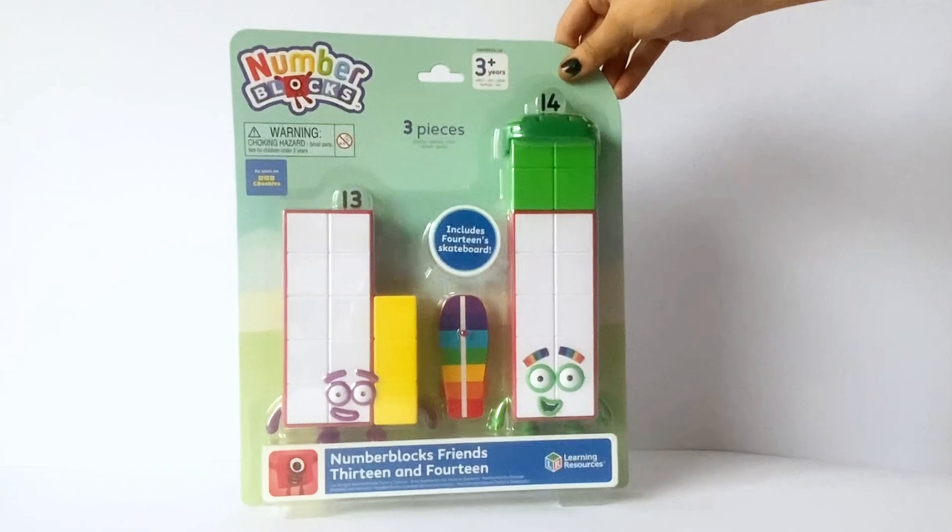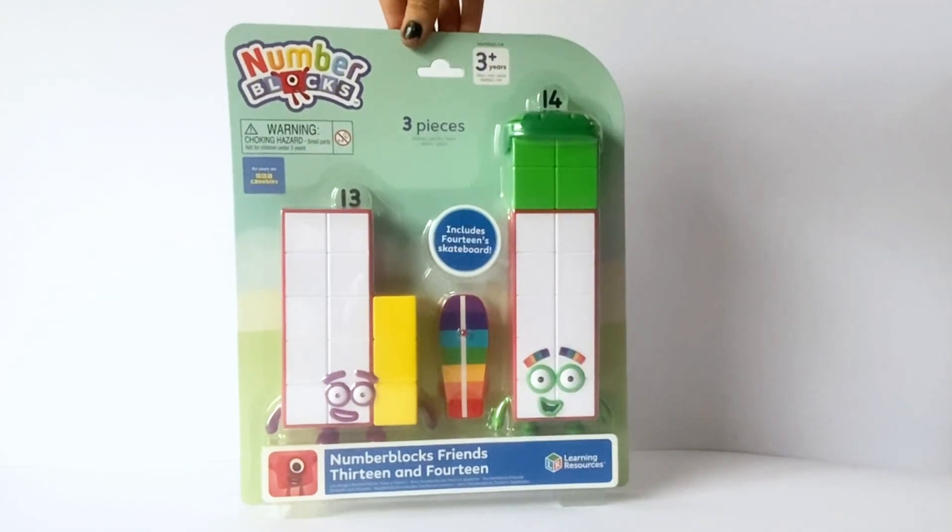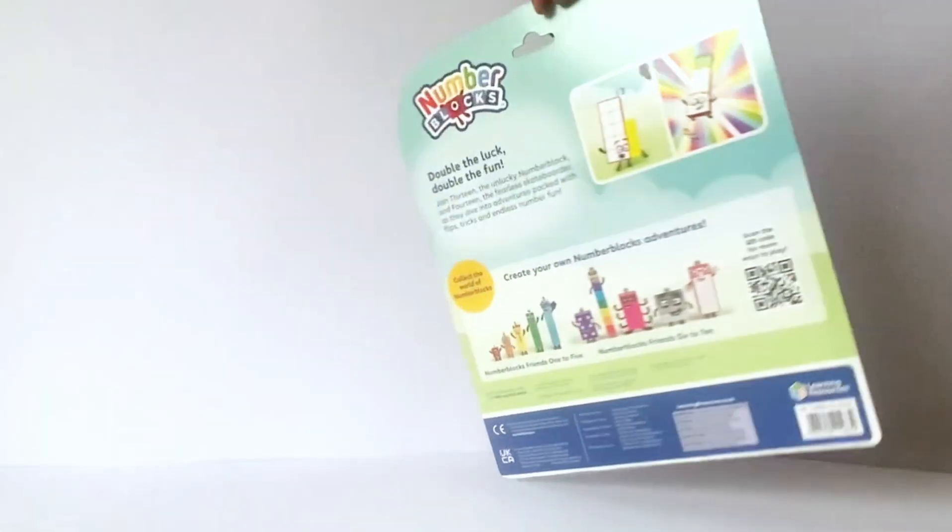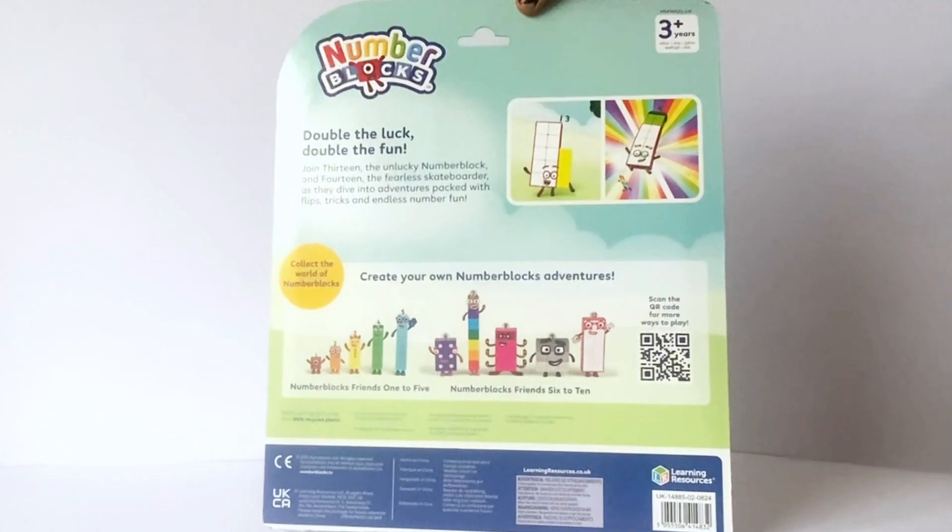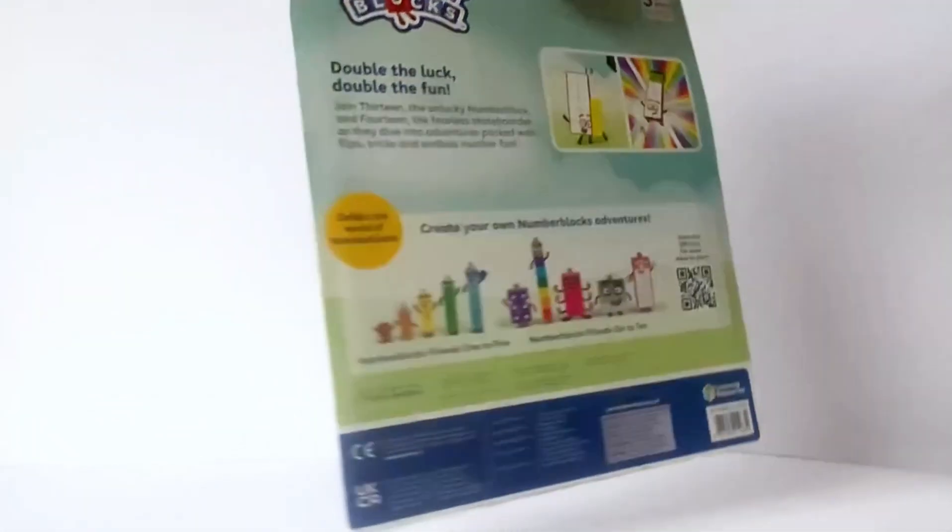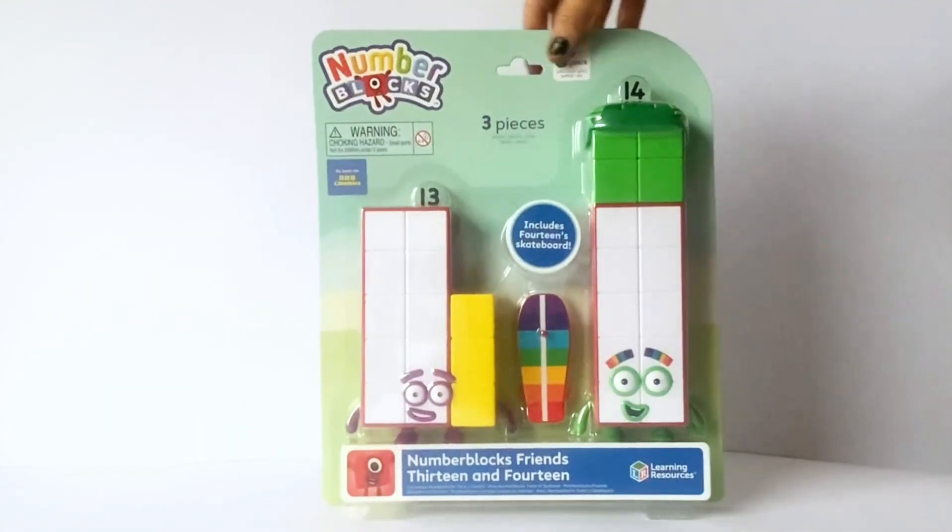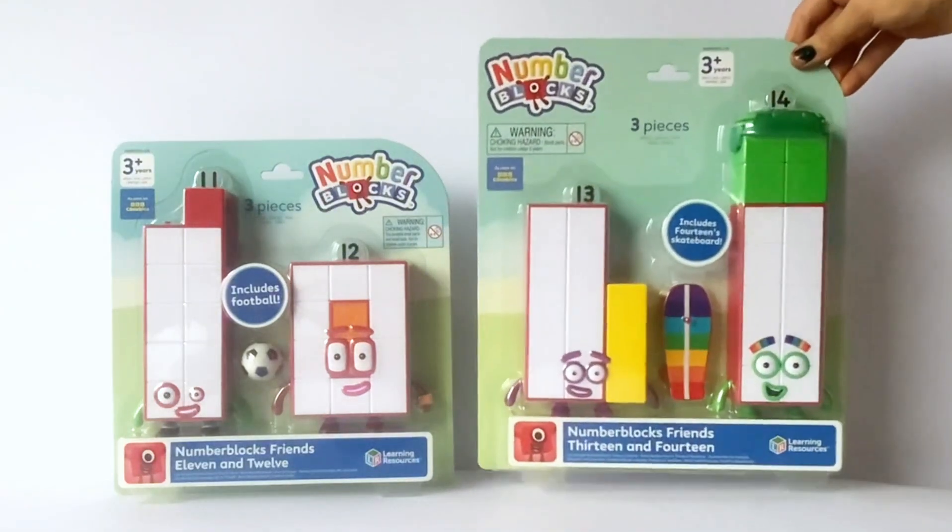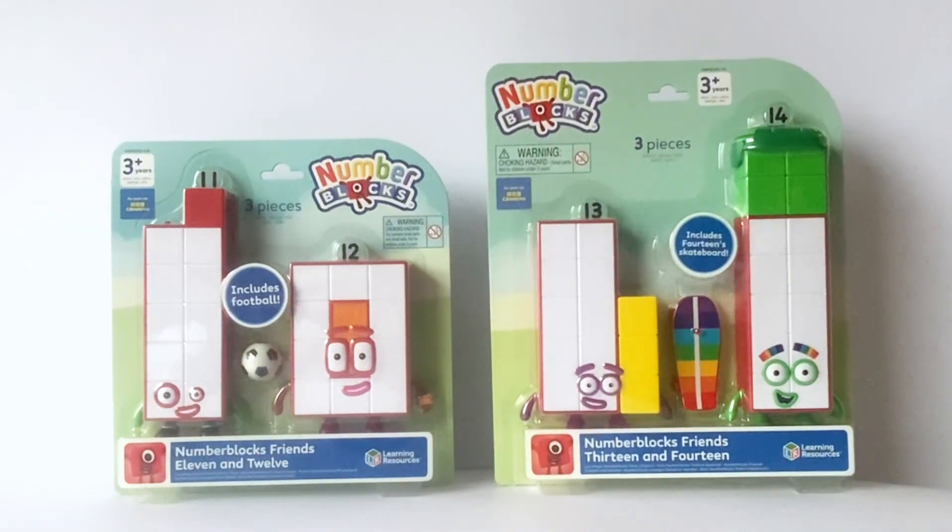The next packet we have to explore is the NumberBlock's NumberBlock friends 13 and 14. The accessory that comes with this is 14's cool skateboard. Double the luck and double the fun with NumberBlocks 13 and 14. Again, this pack only includes 13 and 14. So now we'll go ahead and open each packet and explore each NumberBlock character.